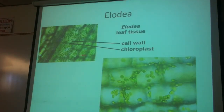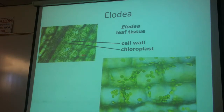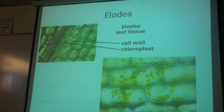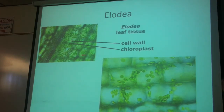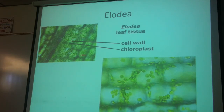This is Elodea leaf tissue. You can see the nice cell wall and chloroplasts. Animal cells don't have a cell wall and don't have chloroplasts — that's something special to plants and single-celled organisms like algae. These chloroplasts don't have a specific fixed spot — they constantly circle around within the leaf so that everyone gets a shot at sunlight, because there are light and dark reactions for photosynthesis.